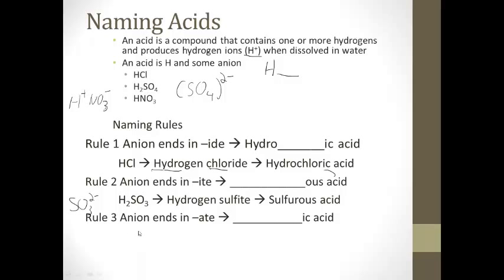And finally our third rule, if the anion ends in -ate, then it's going to be something-ic acid, without the hydro. This one had hydro-something-ic acid, like hydrochloric acid, here there won't be that hydro. For an example, HNO3, we have our NO3- ion, it's going to be called nitric acid. Because this is a hydrogen nitrate, HNO3, hydrogen nitrate, so it's going to be nitric acid.